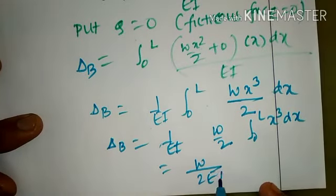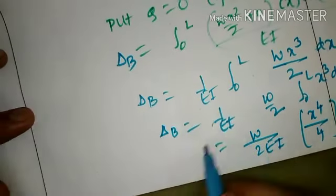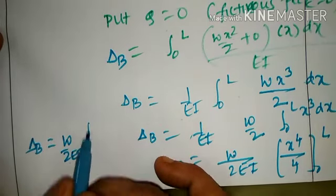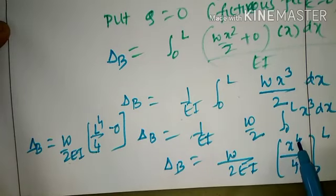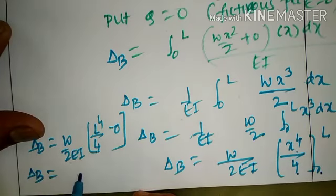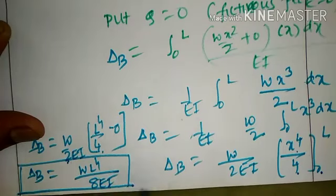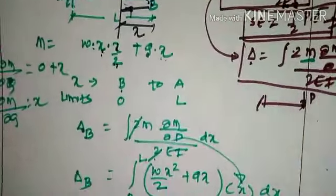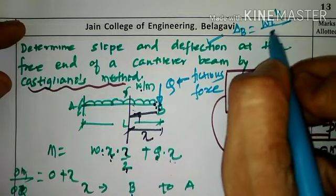So delta B equals (W/2EI) times the integral from 0 to L of X³ dx. Integrating X³ gives X⁴/4 evaluated from 0 to L. Substituting limits: (W/2EI)·(L⁴/4 − 0) = WL⁴/(8EI). Therefore, the deflection at the free end of a cantilever beam subjected to UDL throughout the span is WL⁴/8EI.